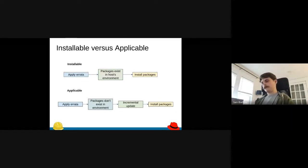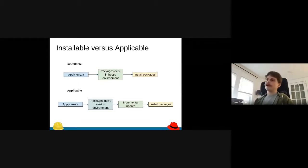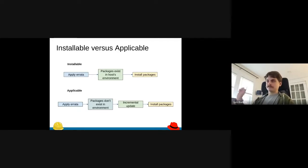I mentioned that there is a thing of installable versus applicable errata. Installable means it's immediately available to your host. It exists in your host environment. You can just click apply errata and it'll apply it. But applicable is slightly different. It means that it's available in the library repos that are available to your host but not necessarily in the environment. So maybe you did some filtering or something like that and you accidentally filtered out these new packages that need updates. Then what you would do is click apply the errata and Katello would do an incremental update to add your content to the environment via a new content view version with a point release and then you'd install your packages.